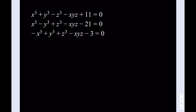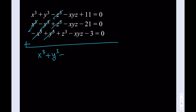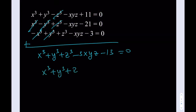The first thing I'm going to do is add these equations, and there's a good reason for that. When I do add these equations, x cubed is going to cancel out, y cubed is going to cancel out, and z cubed is going to cancel out. So I'm going to end up with x cubed plus y cubed plus z cubed, and then minus 3xyz, and then 11 minus 24 is going to be negative 13.